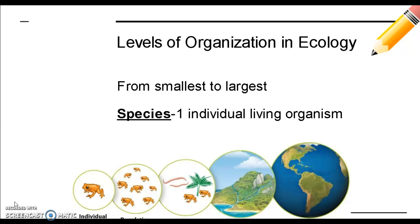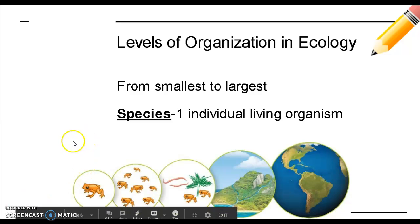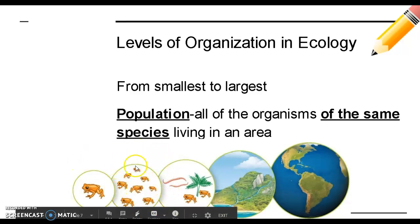In our Characteristics of Life lesson, we discussed the different hierarchies and levels of organization in biology. We're going to review the levels we're concerned with in ecology, going from smallest to largest. In ecology, we can study the species, which is one individual living organism. The next level up is the population — populations are made of organisms of all the same species living in an area. Here in this picture, all of these little orange frogs make up a population.